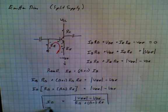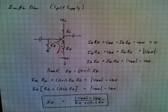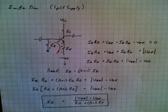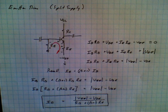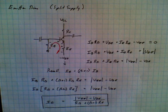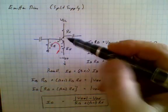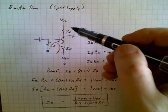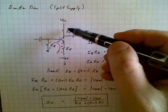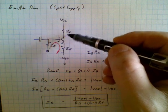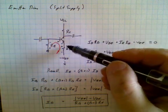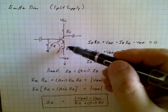Therefore, IB equals the absolute value of VEE minus VBE, divided by RB plus (beta plus 1) times RE. That is the base current for this biasing circuit. From here we can easily find IC, which is simply beta times IB. We can also determine the voltage drop across every component — for example, the voltage across RC is IC times RC, and the voltage across RE is IE times RE.